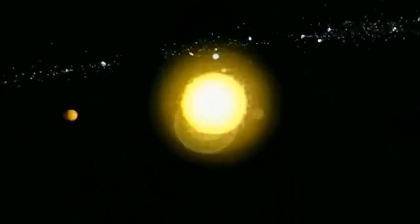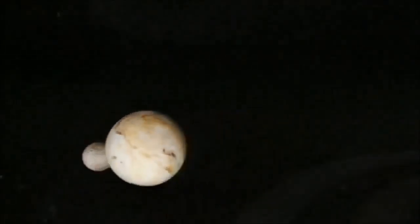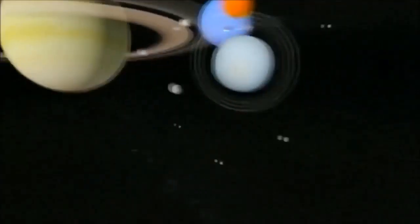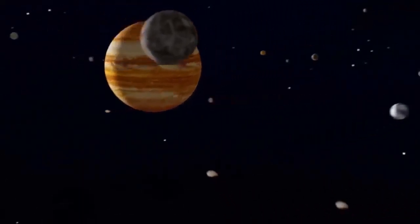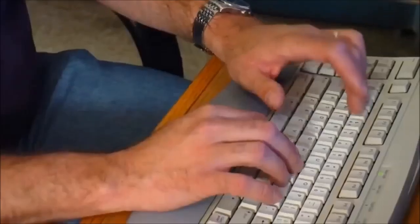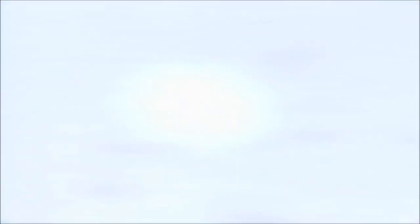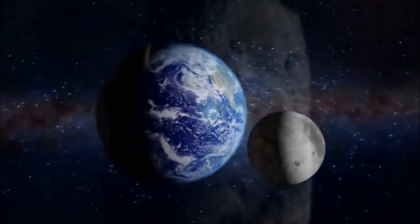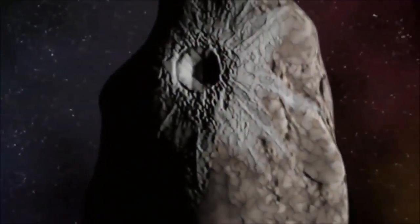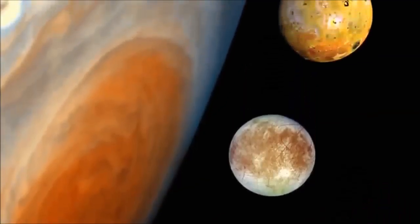I think the most shocking thing was how very different the solar system is. These are the moons surrounding the planets. Moons that were once unknown or considered afterthoughts are now on the cutting edge of astronomical exploration. What was surprising, that they all didn't look like our moon.